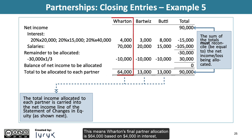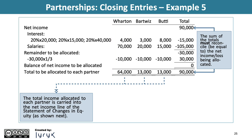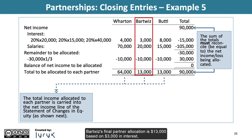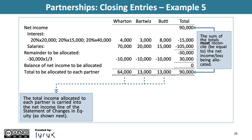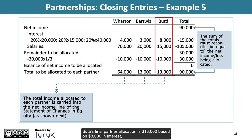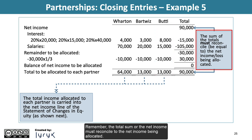Wharton's final allocation is $64,000, based on $4,000 in interest plus $70,000 in salary less his $10,000 share of the net income shortfall. Bartwiz's final allocation is $13,000, based on $3,000 in interest plus $20,000 in salary less her $10,000 share. Beauty's final allocation is $13,000, based on $8,000 in interest plus $15,000 in salary less her $10,000 share. Remember, the total sum of the allocations must reconcile to the net income being allocated.